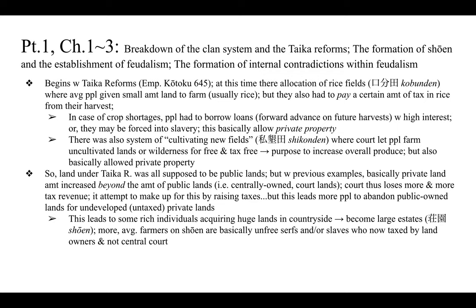In the case of crop shortages people had to borrow loans — essentially forward advances on future harvests with high interest — or could even be forced into slavery. Under the system there was basically room for private property, as these were independent producers giving a portion of surplus to lords. There was also a system called Shikonden of cultivating new fields, where the court let people farm uncultivated wilderness for free, tax-free, to increase overall produce and expand the agricultural base.